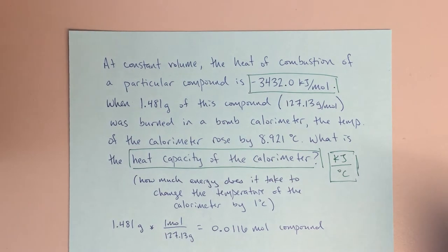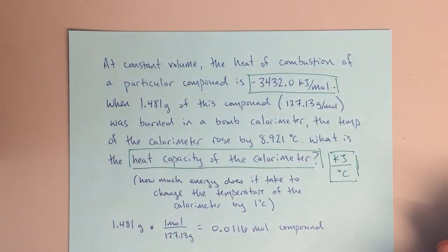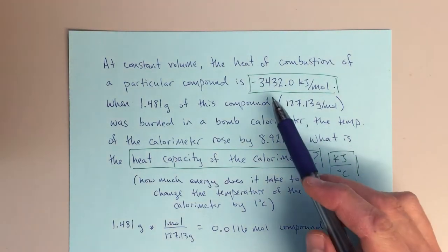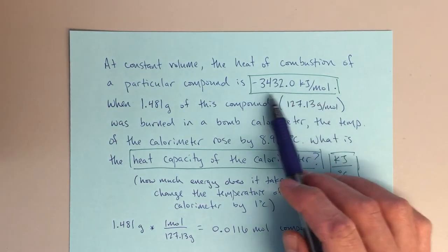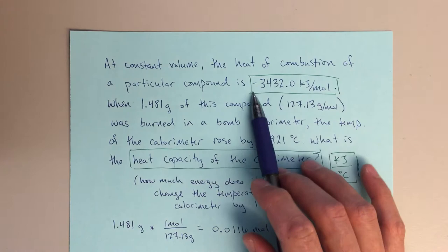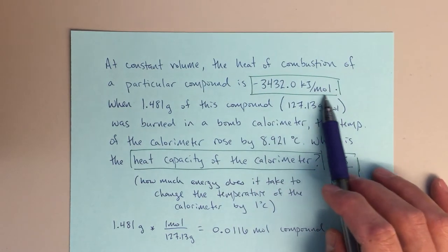Alright class, so this video is going to explain another problem that has a lot of good aspects to it and will help us with our understanding of the transfer of energy that we've been talking about. Here's the question: at constant volume, the heat of combustion of a particular compound is minus 3432.0 kilojoules per mole. This is really sort of like a delta H, an enthalpy for a reaction because it's per mole.